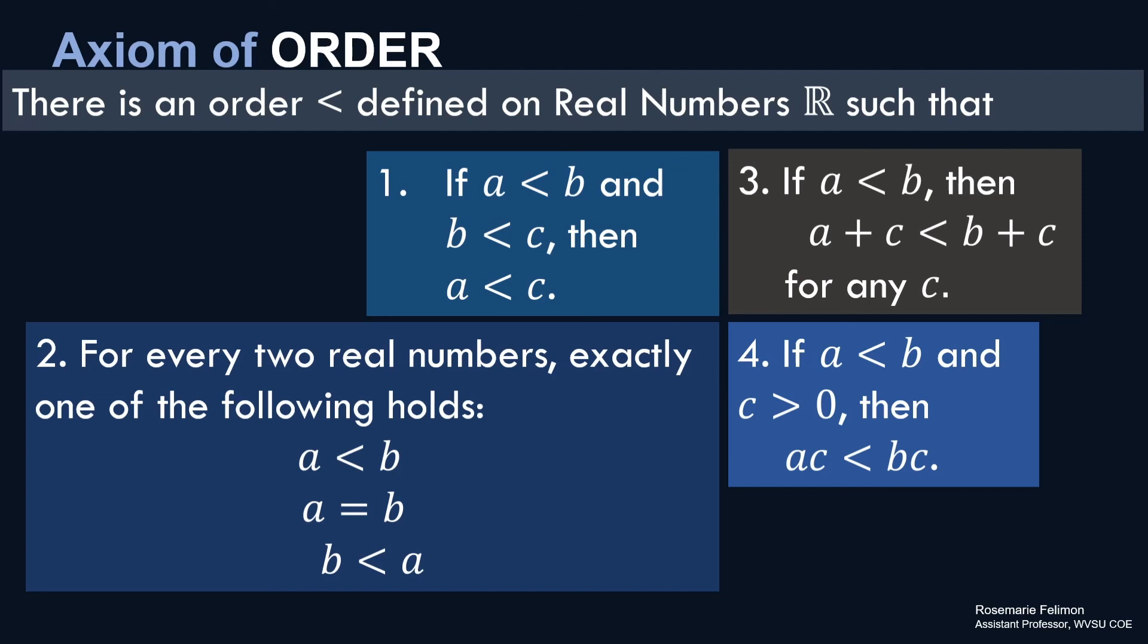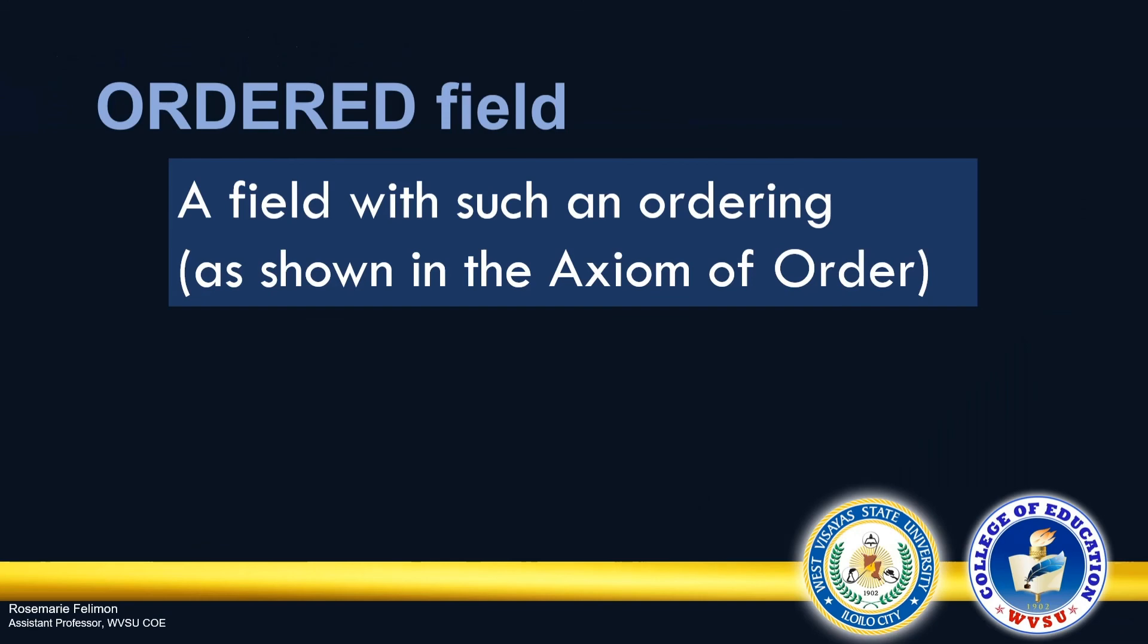So this is the axiom of order, and we have to establish four conditions. The first one is transitivity. Number two, the trichotomy. Number three is simply adding the same real number to both sides. Number four is about multiplication of the same positive real number on both sides. We then define an ordered field, and this is simply a field with such an ordering as shown in the axiom of order.